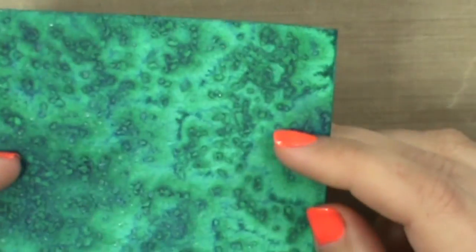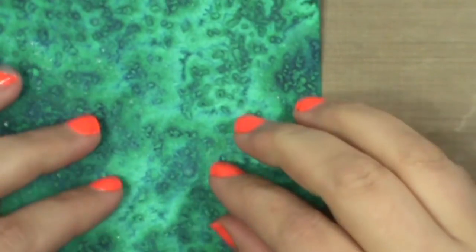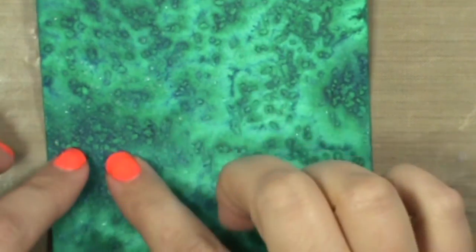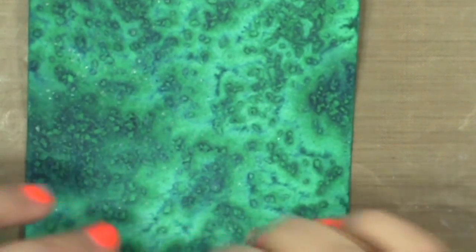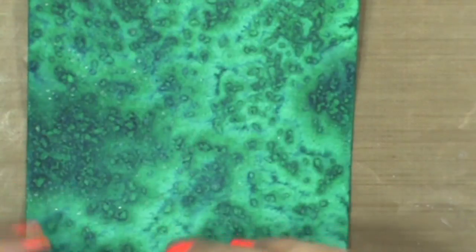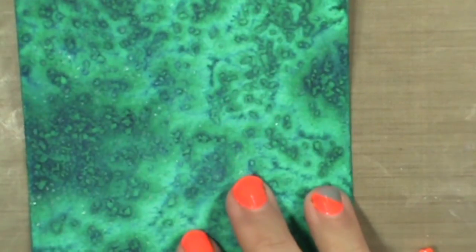This is watercolor paper instead of just plain cardstock, which I would highly recommend using if you want to get this really variegated, funky, crystal-y look. If you don't want to get that look and you're okay with a more subtle look, then just use regular cardstock. Okay, so this again is distress inks.